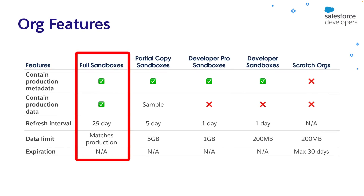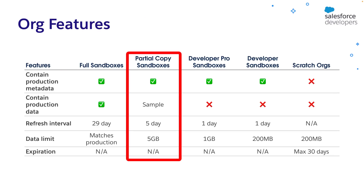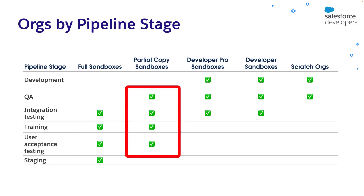Full sandboxes copy all the metadata, which is your org configuration, and data from your production org. But you have to wait 29 days to refresh them. These are ideal for performing several types of testing that need the environment to be as close to production as possible. Partial copy sandboxes only copy a portion of the data and have a shorter refresh interval of five days.